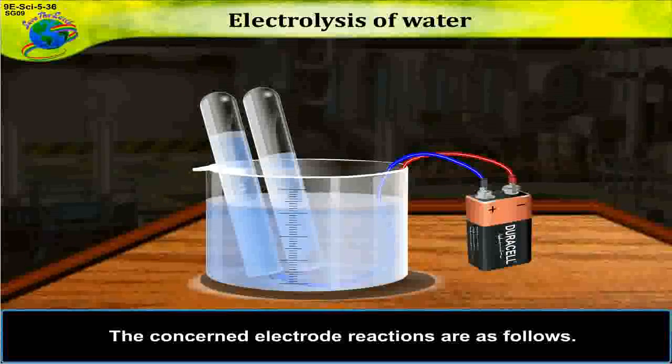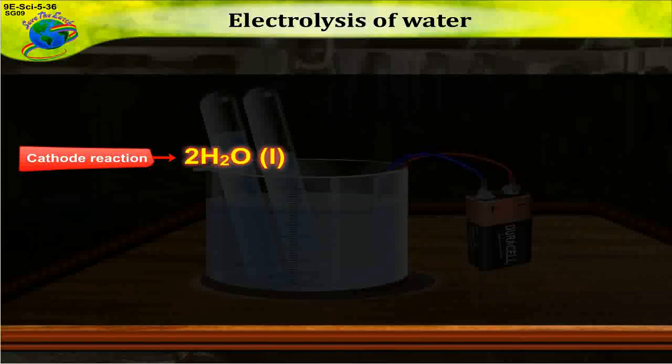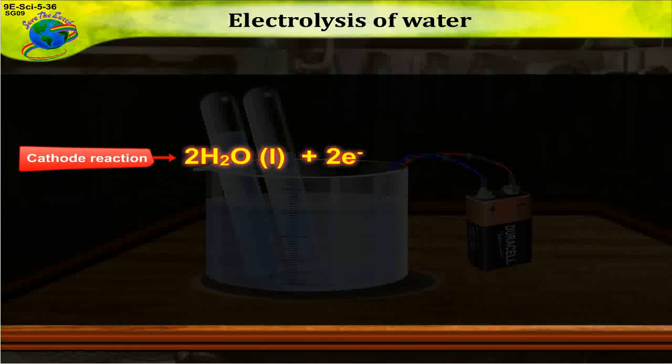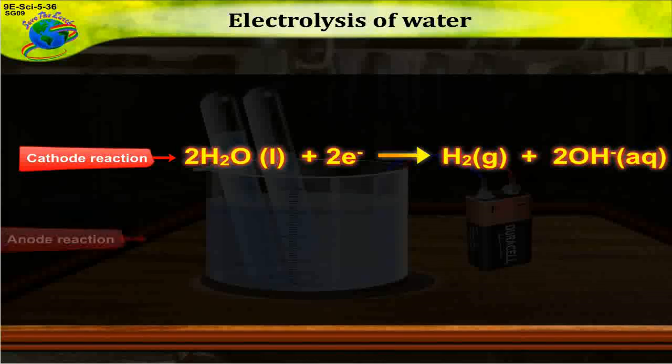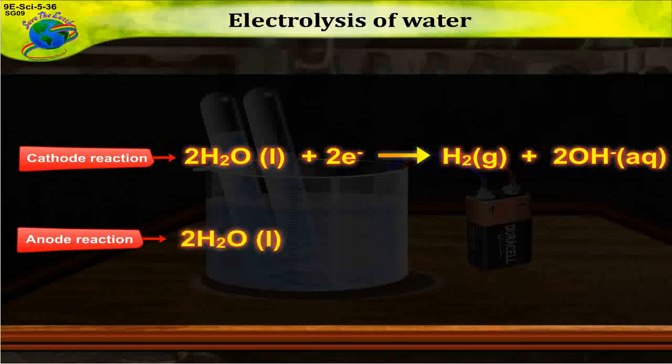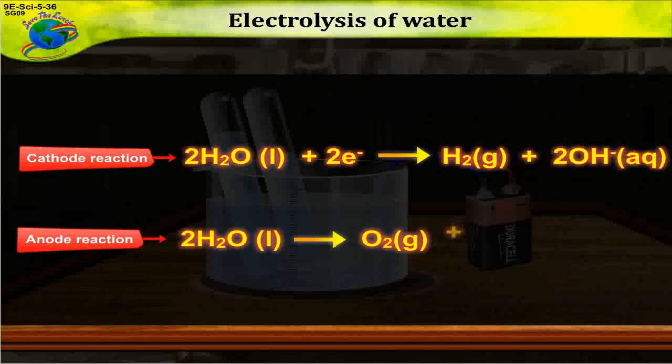The concerned electrode reactions are as follows: Cathode reaction: 2H2O (liquid) + 2e- gives H2 (gas) + 2OH- (aqueous). Anode reaction: 2H2O (liquid) gives O2 (gas) + 4H+ (aqueous) + 4e-.